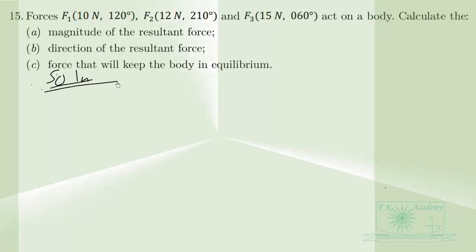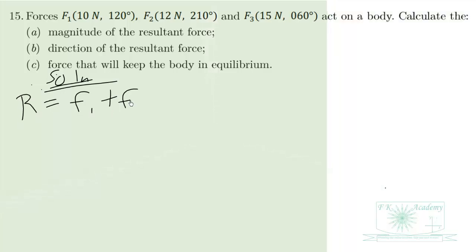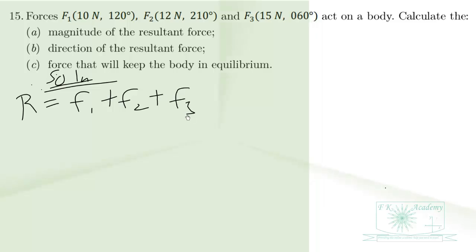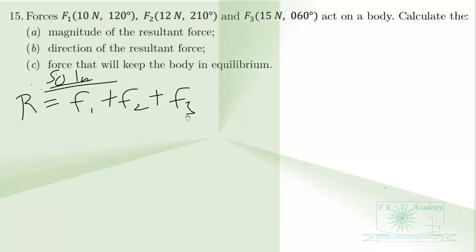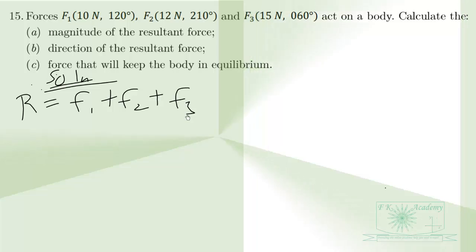To find the resultant force, we add F1, F2, and F3. F1 is given as 10 Newtons at 120 degrees — that is the magnitude and direction. So we have to convert it to the column vector form.